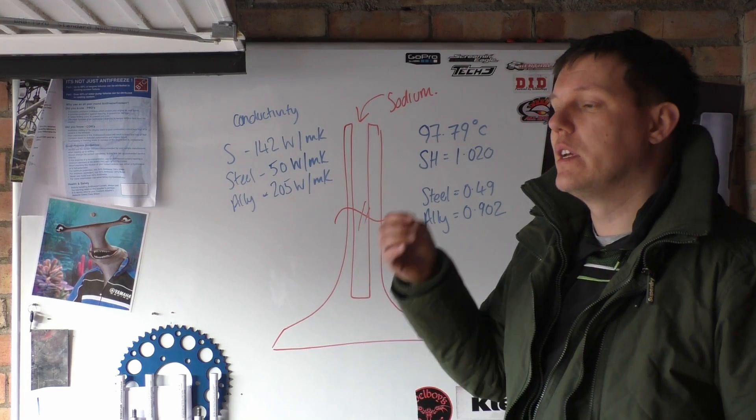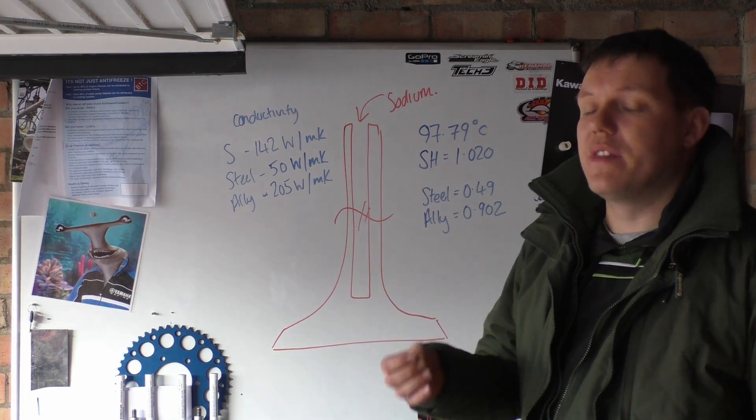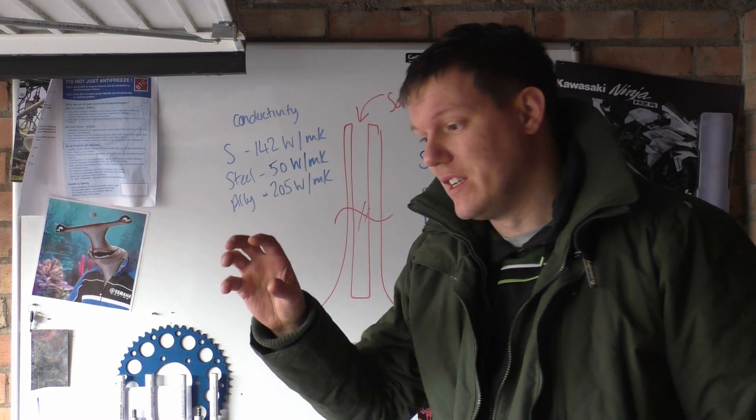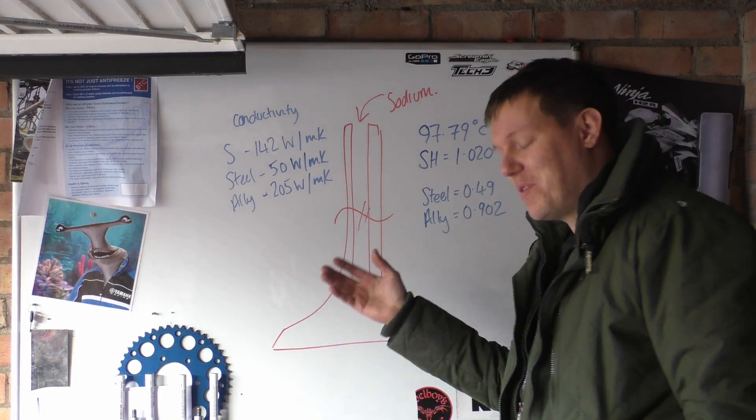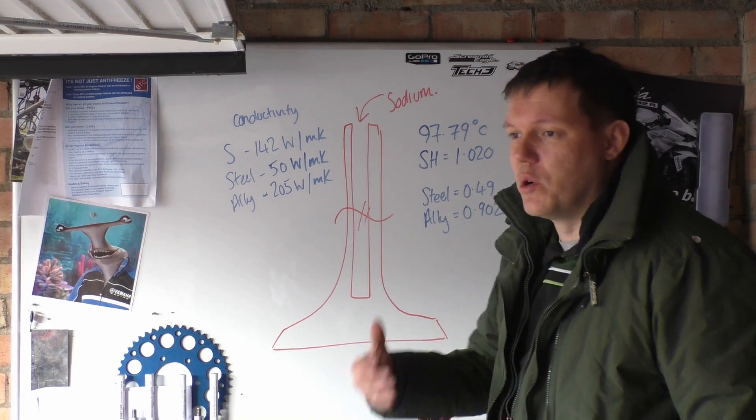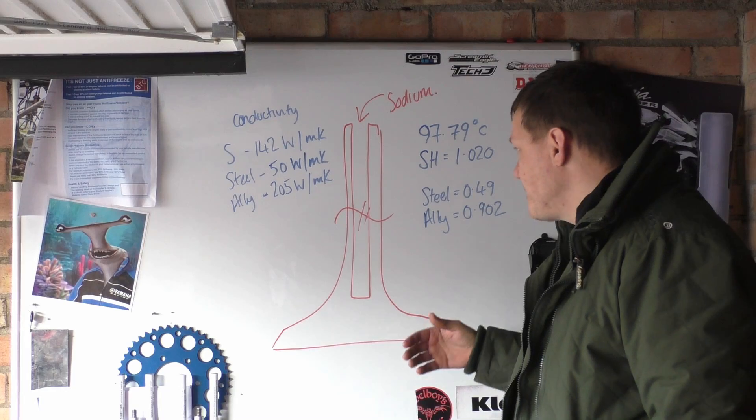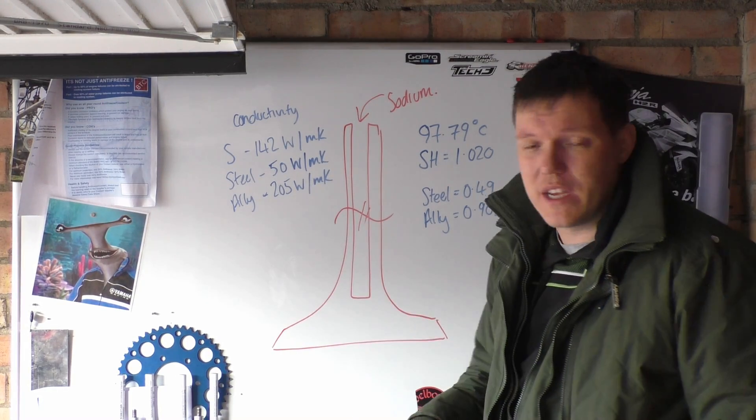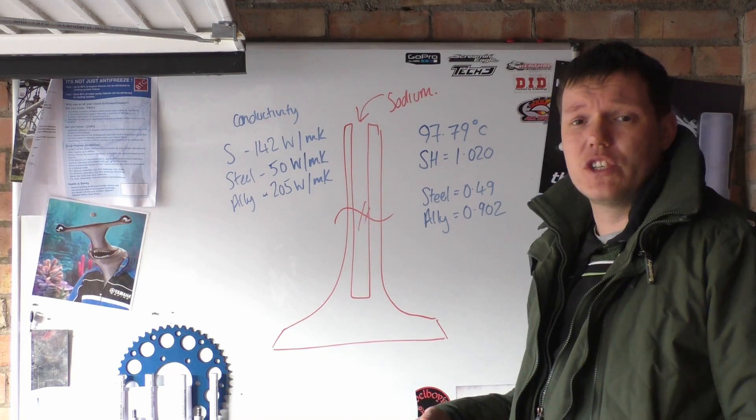When these valves got hot, we saw that with the Indian V-twin where they used to have these ports to allow cooling air to be drawn in to cool the valves, to stop the valves from cooking. When they went up in power levels they found that the exhaust valves were basically bending and failing because when materials get hotter they get weaker.